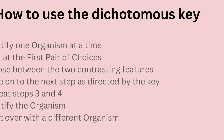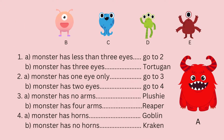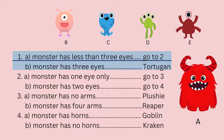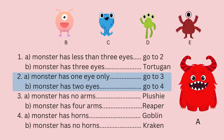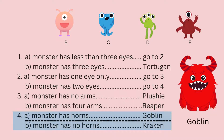Now let's put this in action. I have here a fun monster dichotomous key. Let's begin with Monster A. At step one: does Monster A have less than three eyes, or does it have three eyes? Since Monster A has two eyes, we move on to step two. Step two asks if the monster has one eye or two eyes. Since Monster A has two eyes, we move on to step four. Step four asks if the monster has horns or no horns. Monster A has horns, so we can identify it as a goblin.